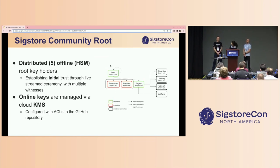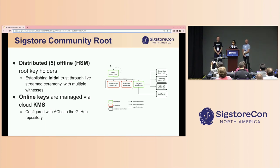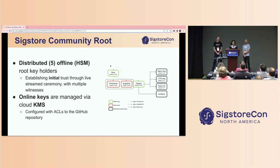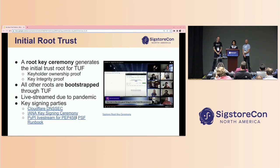Diving deeper into the layout of the SigStore community root: we have a visualization of the four major roles in red and green, and the four artifacts assigned by the targets. We have two different types of keys — offline keys and online keys. The offline keys are distributed amongst five community keyholders: Bob, Santiago, Joshua, Dan, and Marina Moore from NYU. Those five keyholders each hold an offline HSM key used to sign the green metadata files — root and targets. The online keys are hosted on Cloud KMS, configured with workload identity from the GitHub repository to do the signing.